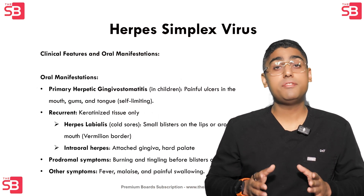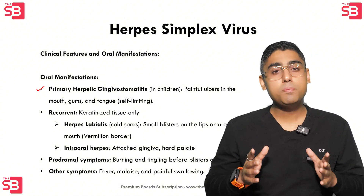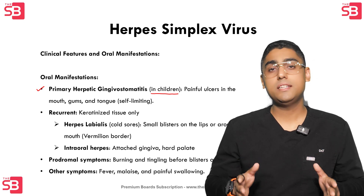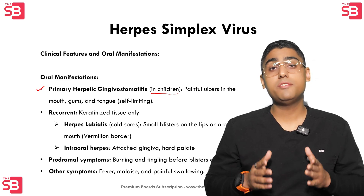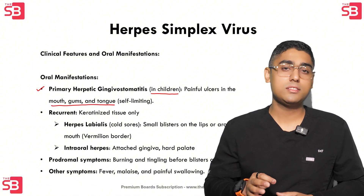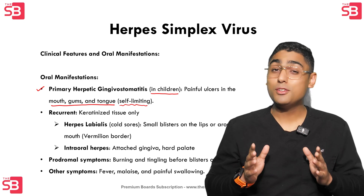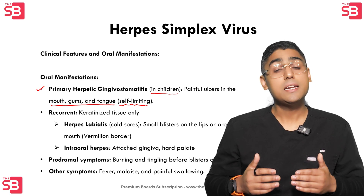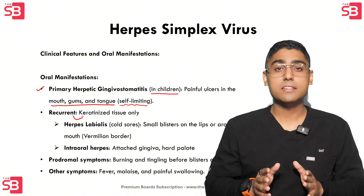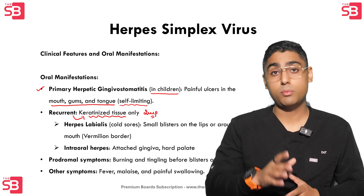Now let's look into the clinical features and oral manifestations of HSV, starting with primary herpetic gingivostomatitis. This is normally seen in children during the first encounter with the virus. It presents as very painful ulcers that appear in the mouth, on the gingiva, and the tongue. Fortunately, it's self-limiting, meaning it clears up on its own. But in recurrent cases, the virus tends to re-emerge on the keratinized tissues only — and this is an exam question.